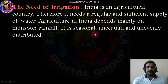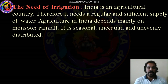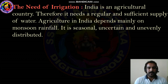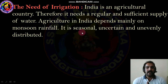So why do we need irrigation? India is an agricultural country, so it needs a regular and sufficient supply of water. Agriculture needs regular and sufficient supply of water. India mainly depends on monsoon rainfall, but monsoon rainfall is seasonal, uncertain, and unevenly distributed.